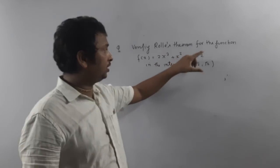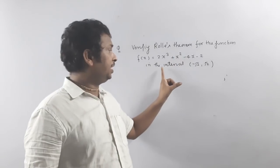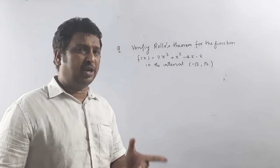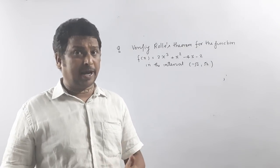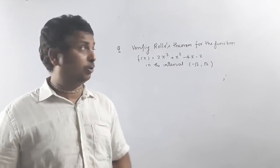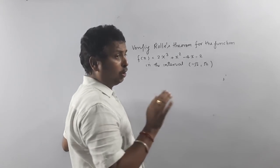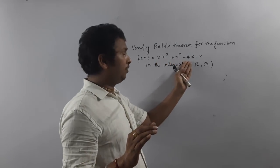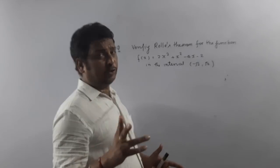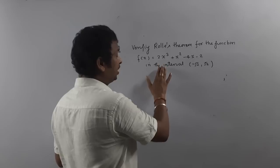Verify Rolle's Theorem for the given function. What is the first condition? f must be continuous. Because this is a polynomial, and we know a polynomial with rational coefficients — integer coefficients — always satisfies continuity and differentiability. A polynomial is always continuous as well as differentiable. So now we check the third condition.